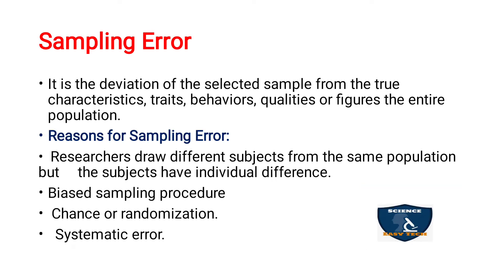Sampling error is the deviation of the selected sample from the true characteristics, traits, behavior, qualities, or figures of the entire population. No matter how conscious you are when selecting samples, there are still chances of sampling error — where the selected sample deviates from the characteristics, traits, behavior, qualities, or figures of the entire population. This deviation is referred to as sampling error.